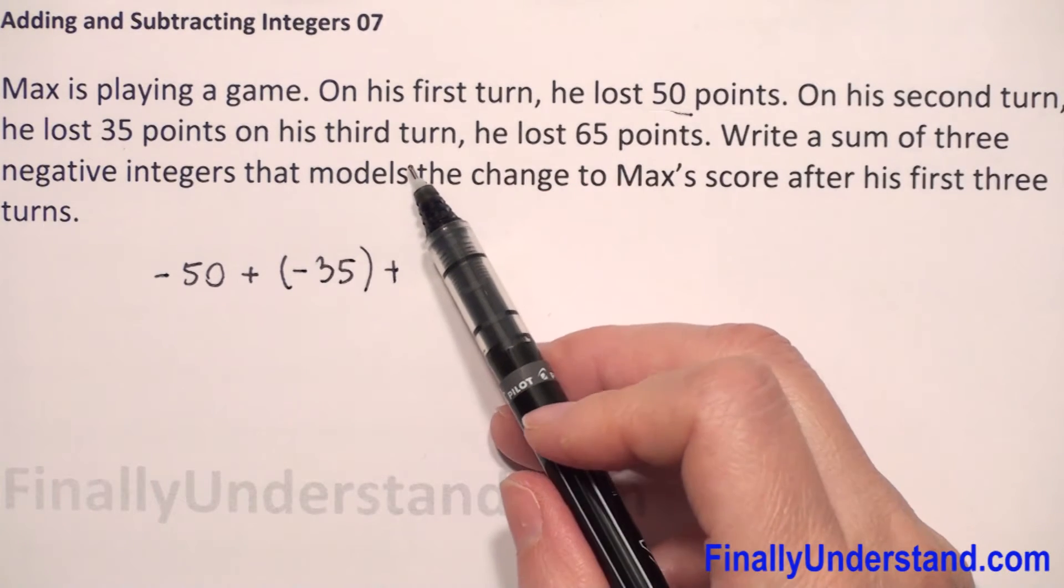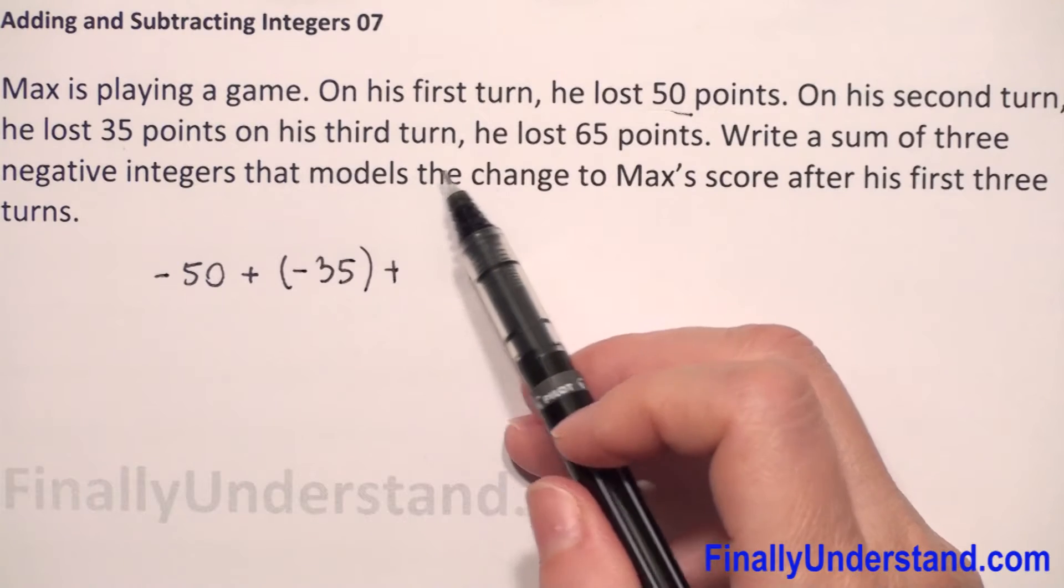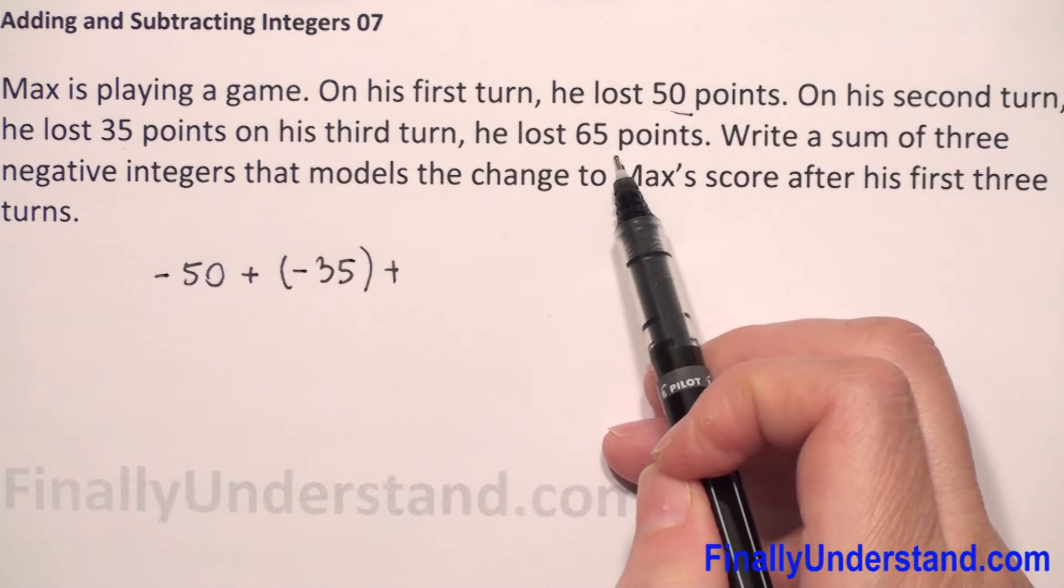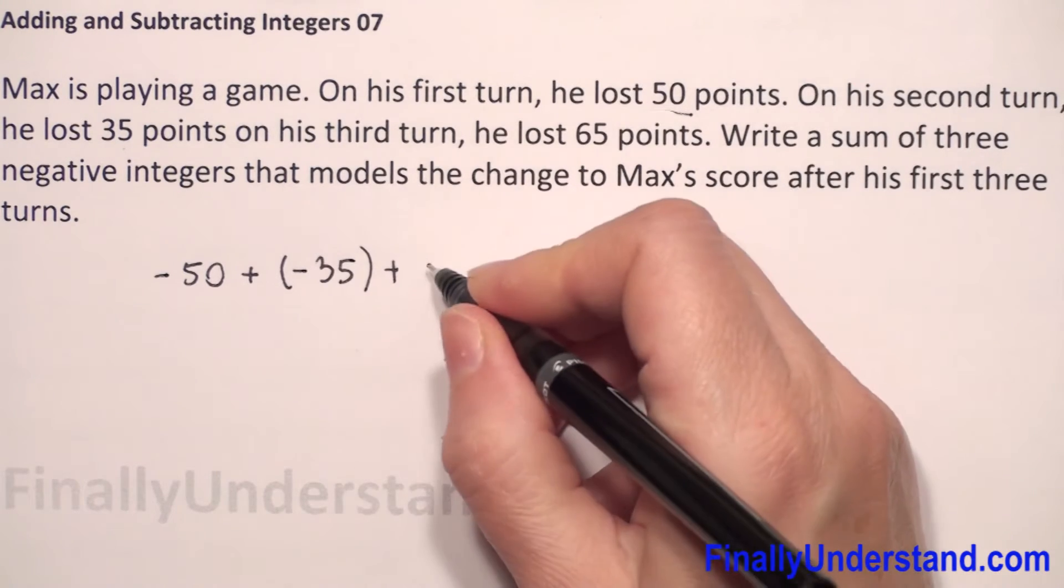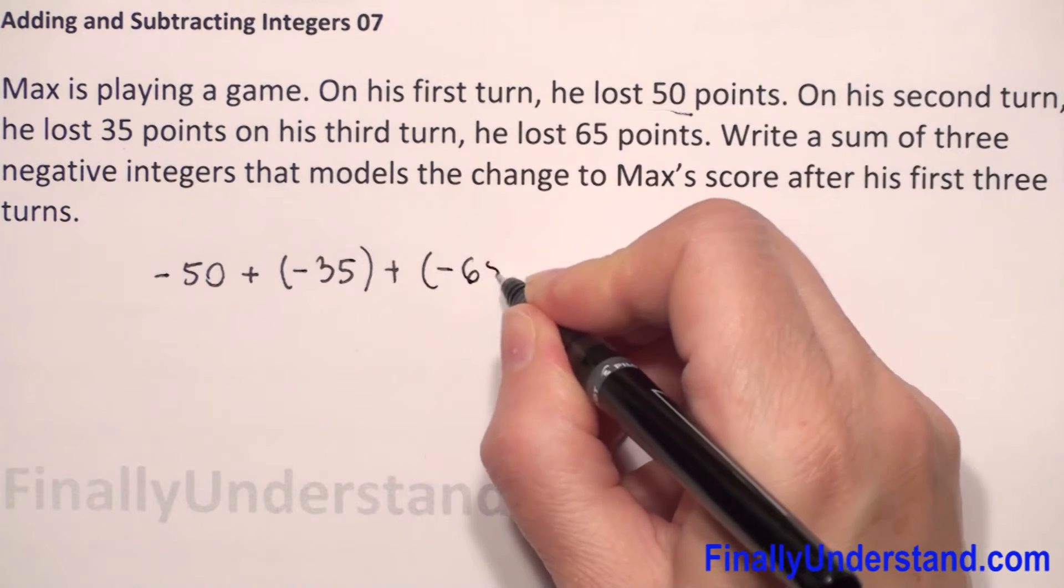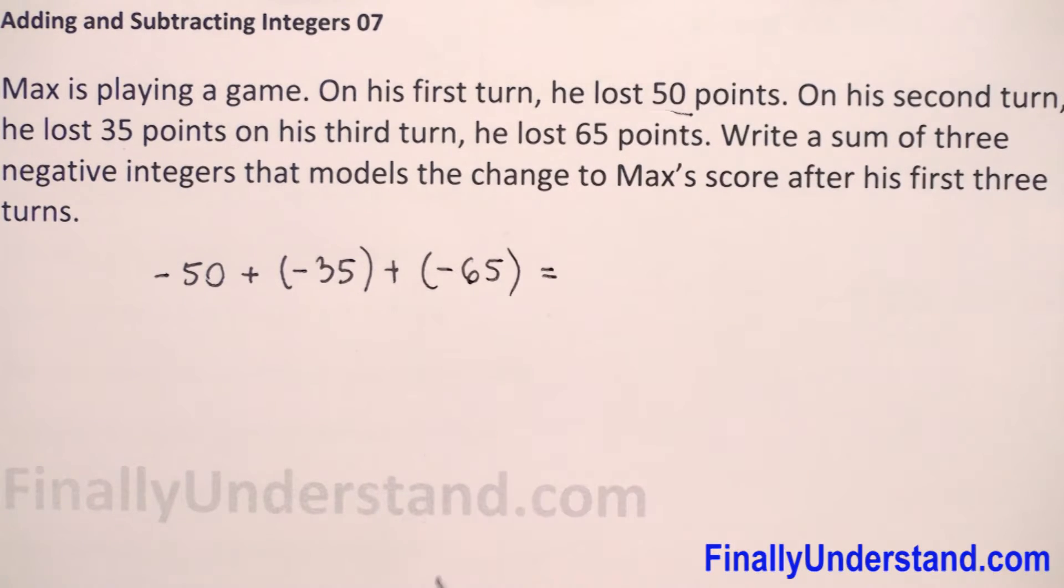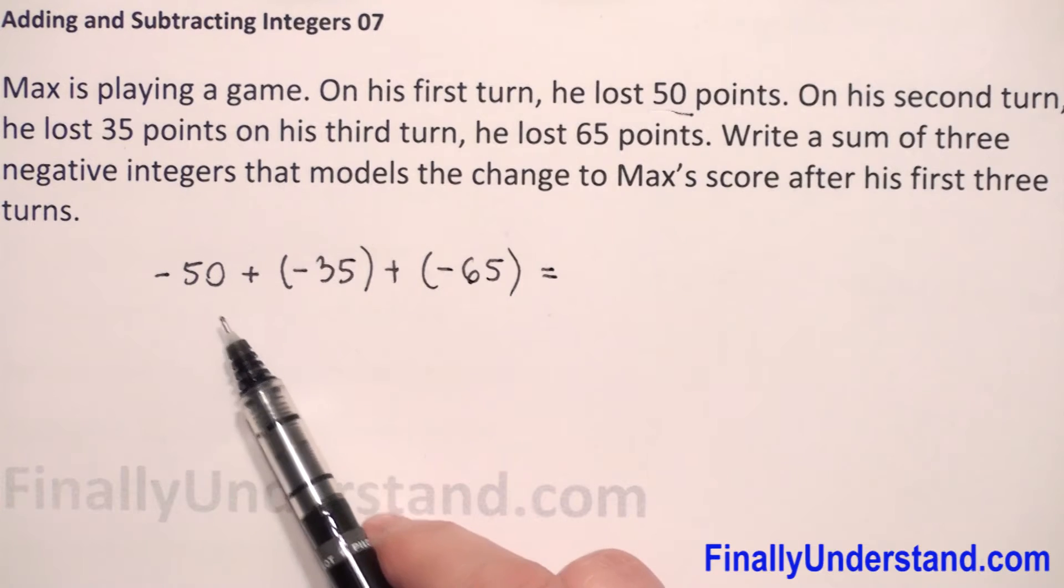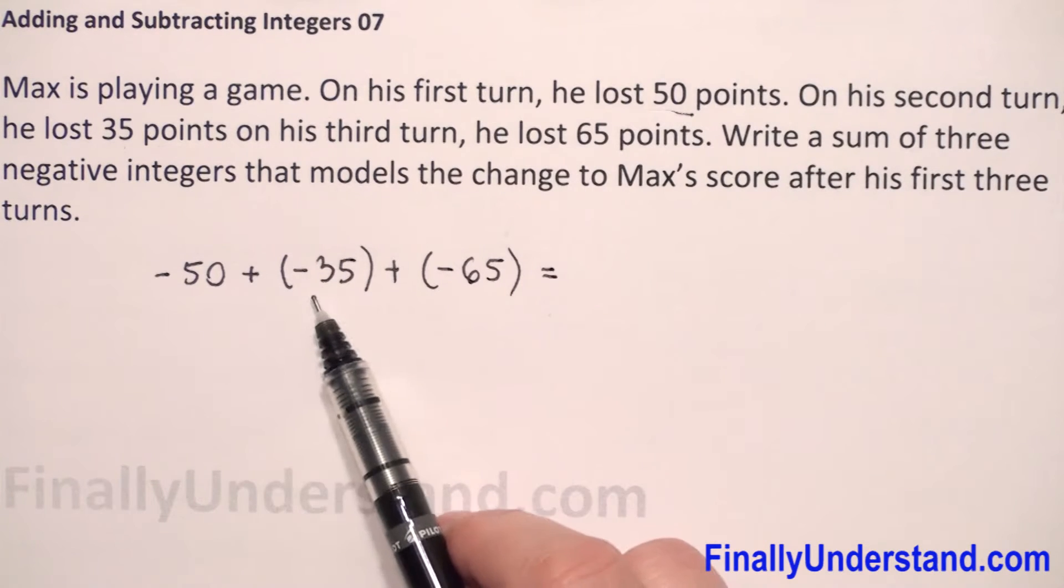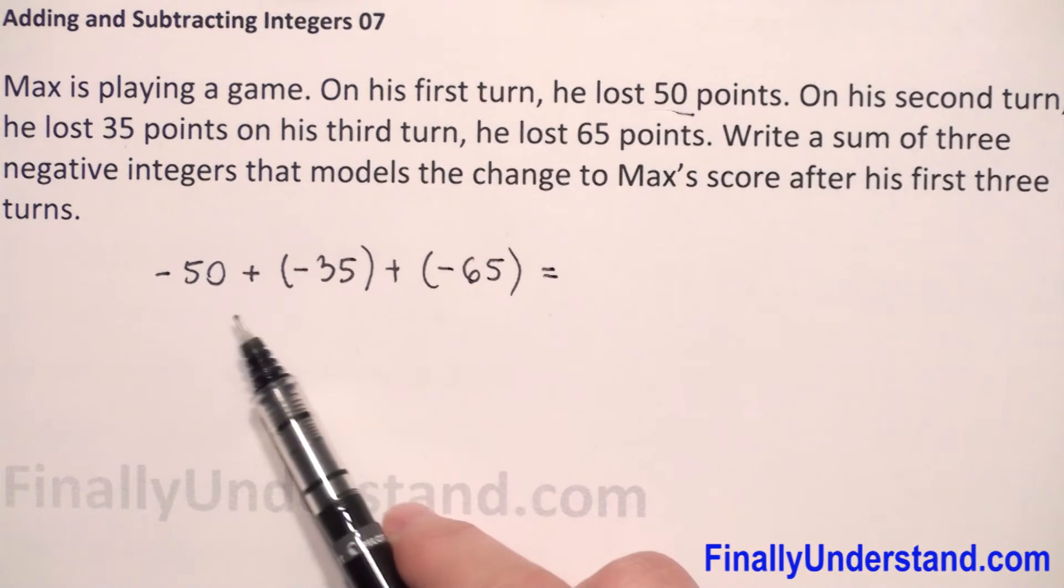And the third time he lost 65 points. So it will be plus negative 65. So this is equal. Now we have addition of three negative integers.